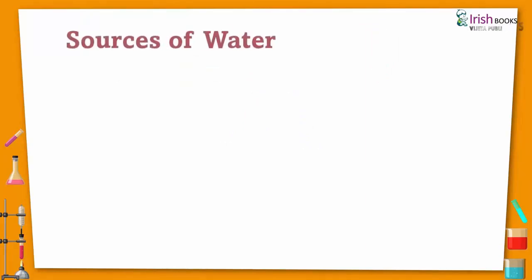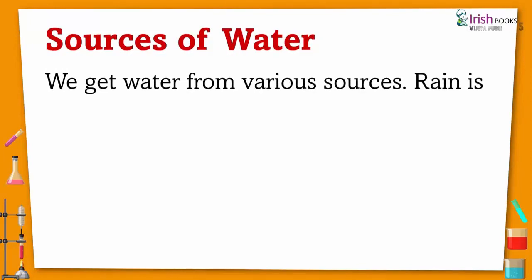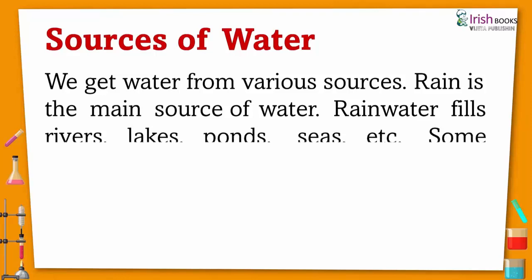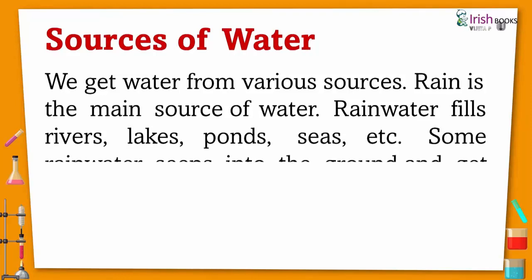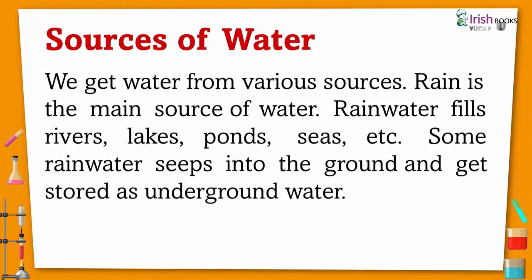Sources of water: we get water from various sources. Rain is the main source of water. Rain water fills rivers, lakes, ponds, seas, etc. Some rain water seeps into the ground and gets stored as underground water.